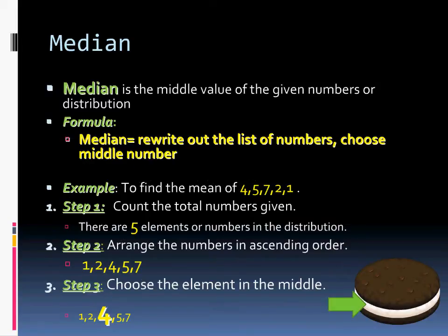Median, on the other hand, is the middle value of a given set of numbers. To figure this out, we have to rewrite all of the numbers in order — which can take a long time with 200 surveys, for example, though technology helps. For a simple example: 4, 5, 7, 2, and 1. Step one: count the numbers — there are 5. Step two: arrange them in ascending order — 1, 2, 4, 5, 7. Then simply choose the middle. The middle number is 4. Mind blown.